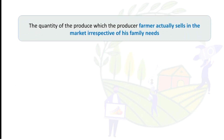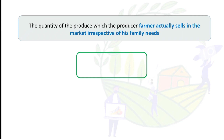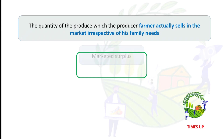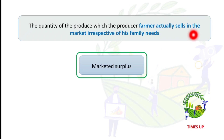The quantity of produce which the farmer actually sells in the market, irrespective of his family needs, is called marketed surplus — not market surplus. So marketed surplus is the quantity a farmer actually sells in the market irrespective of his family needs.